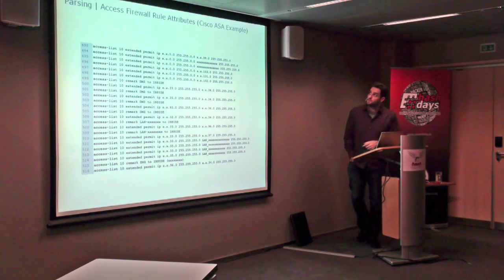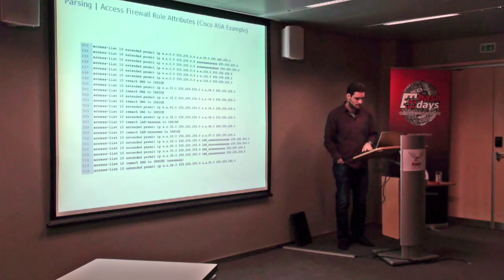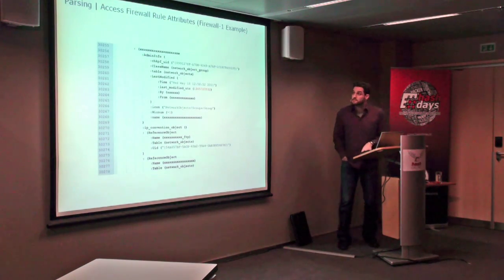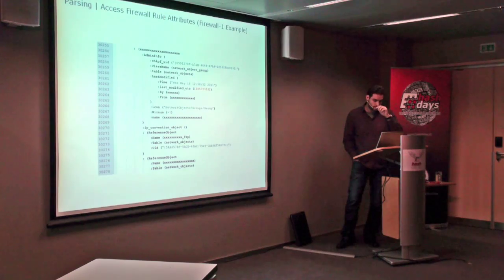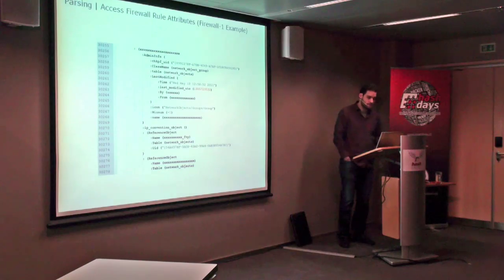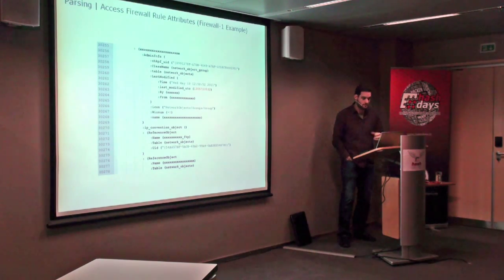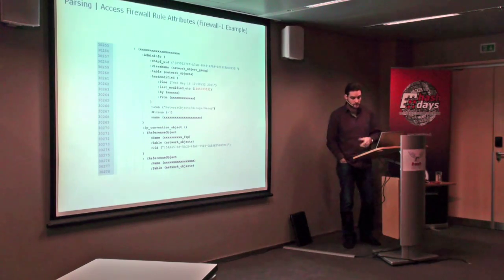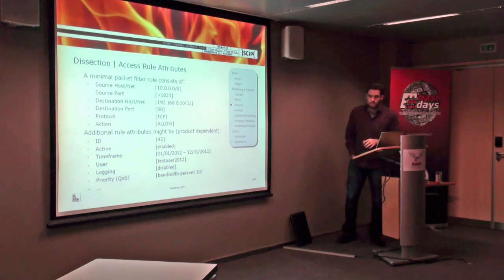Here's an example of Cisco ASA — one line, one rule. I like that because it's very simple, and simple is always good. This is part of a Checkpoint rule set. As you can see, it's more like a tree structure — you can make connections and do more complex things, but it makes it much harder to understand and work with the rule set, especially if you haven't parsed it.